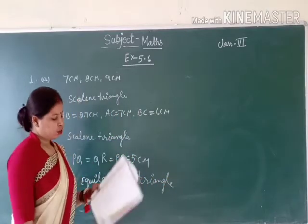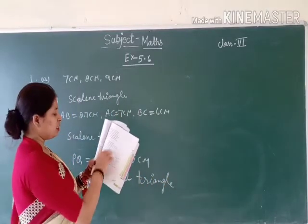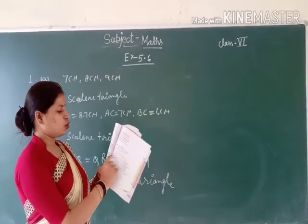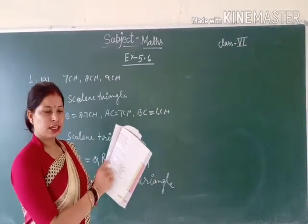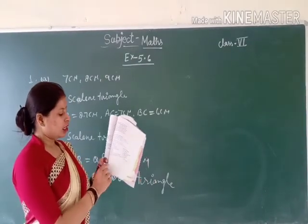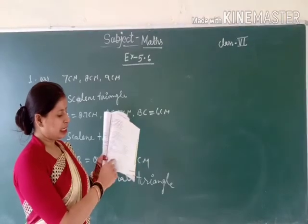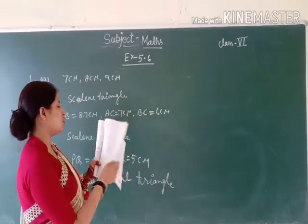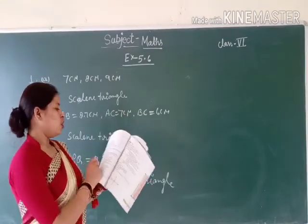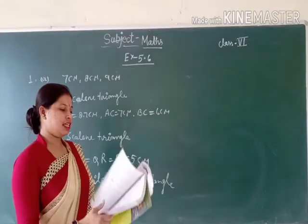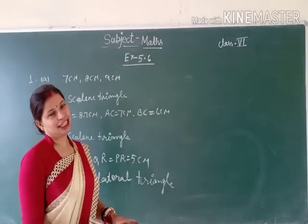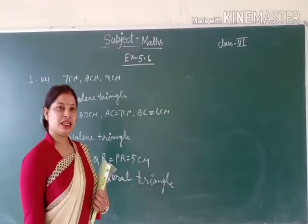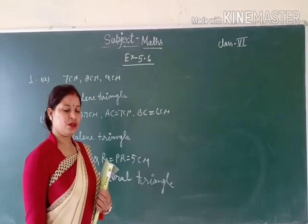Okay students, so you will complete exercise 5.6 like this. In version 2 you will have matching, and in the third version you will have a triangle diagram to label. So exercise 5.6 is now complete. This will complete your notes. Thank you.